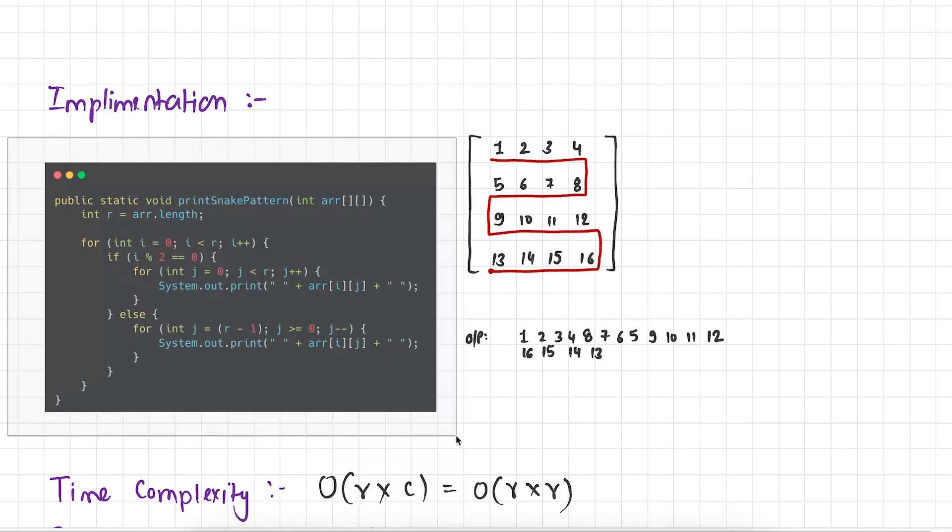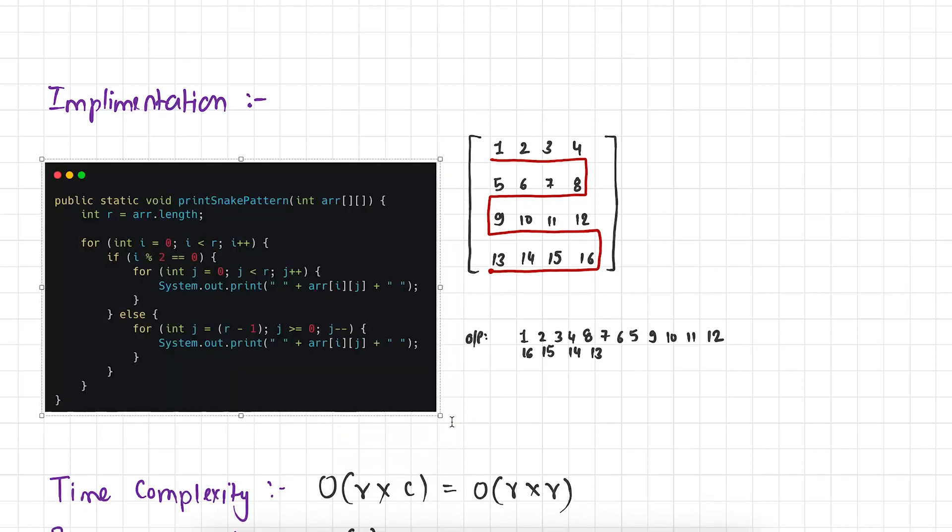So here you can see that we have a function print snake pattern. And this function is taking array as input. In the very first statement we are finding the length of array. Meaning how many array objects are there? And in this case there are 4 objects. And as I said that this is a square array. It means count of rows are exactly equal to count of columns.